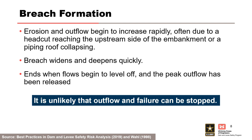The breach formation phase begins when erosion and outflow begin to increase rapidly, often due to a head cut reaching the upstream side of the embankment or a piping roof collapsing. During this rapid downcutting phase, the breach widens and deepens quickly. It ends when flows begin to level off and the peak flow has been released. It is unlikely that outflow and failure can be stopped.